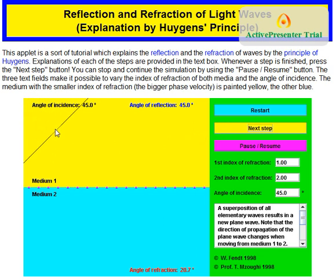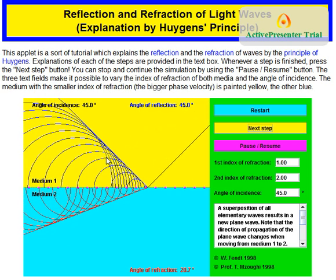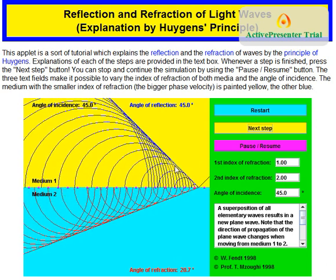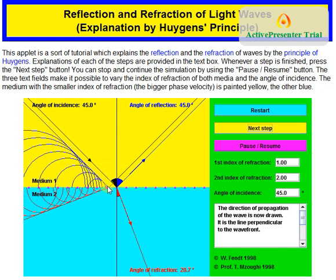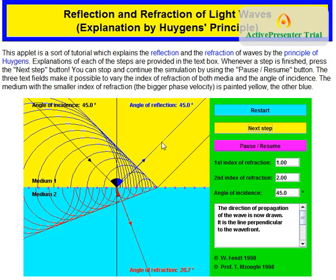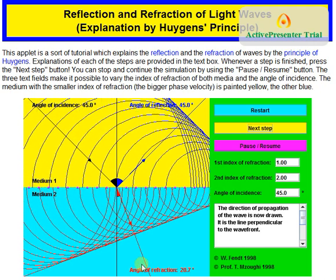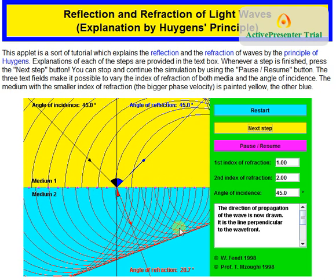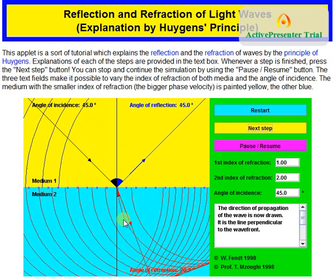Now we have shown the wave front, and the tangent has been drawn along the leading edge of the reflected waves and the refracted waves. The ray of light is always drawn perpendicular to the wave front. This black angle is the angle of incidence at 45 degrees, the reflected rays are shown in black and blue, and the red ray represents the refracted ray, which is perpendicular to the red wave front. As you can see, the angle of incidence is equal to the angle of reflection, and the angle of refraction is less than the angle of incidence.